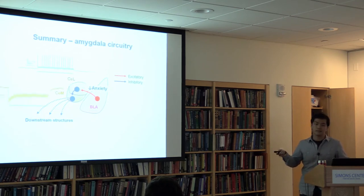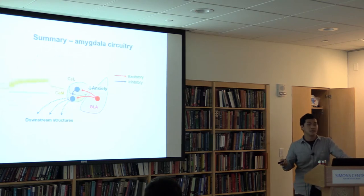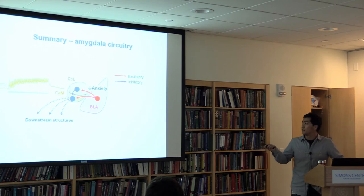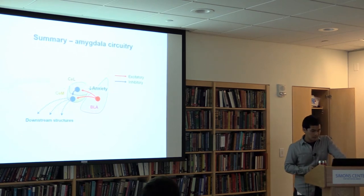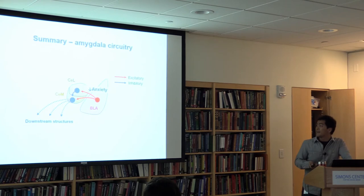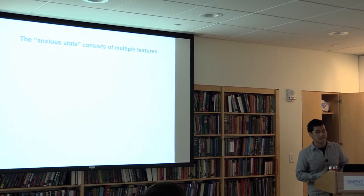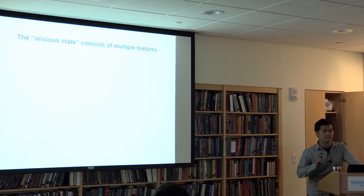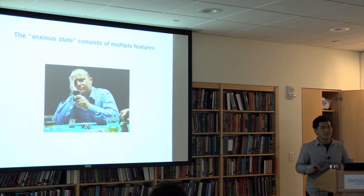In summary, we showed that the BLA-to-CeL projection reduces anxiety-like behavior, one possible mechanism being feedforward inhibition of CeM output neurons. Interestingly, when we directly stimulated BLA fibers in the CeM, that activated the post-synaptic CeM neurons, which would presumably increase anxiety. It will be interesting in the future to see whether the balance between these two pathways determines the overall anxiety level. But this is certainly only part of the anxiety circuitry, because anxiety is a complex behavioral state governed by many brain structures.